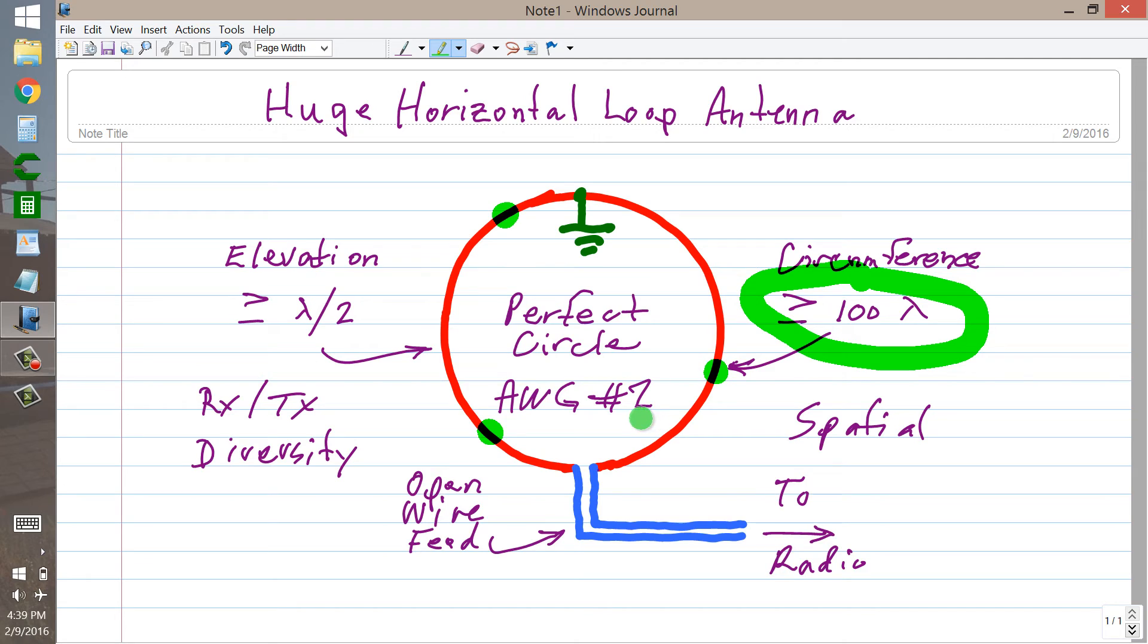That's what I think you're going to get. I don't know if anyone has ever tried anything like this. At 7 MHz, a full wavelength is something on the order of 40 meters. That's something on the order of 130 to 140 feet. So you're talking 1,300 to 1,400 feet. That's about a quarter of a mile in circumference.